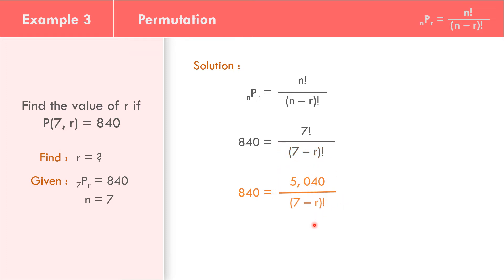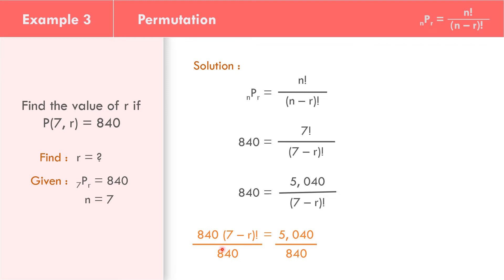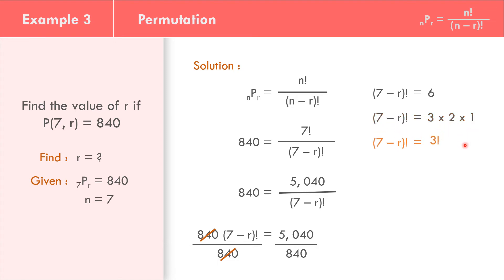So 840 equals 5,040 all over the quantity 7 minus R factorial. Cross-multiplying: 840 times the quantity 7 minus R factorial equals 5,040. Dividing both sides by 840, the left side becomes 7 minus R factorial, and 5,040 divided by 840 equals 6. Now thinking about the factor of 6 as consecutive numbers from 1: that is 3 times 2 times 1, which equals 3 factorial. Since both sides now have factorials, 7 minus R factorial equals 3 factorial.